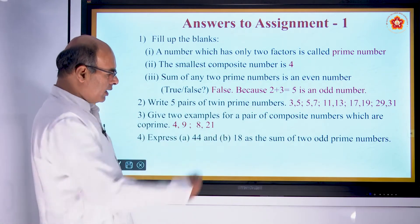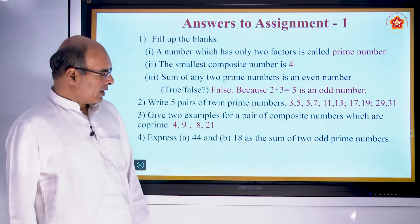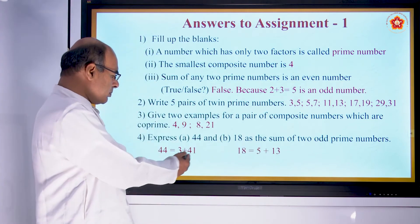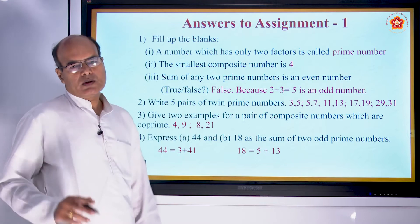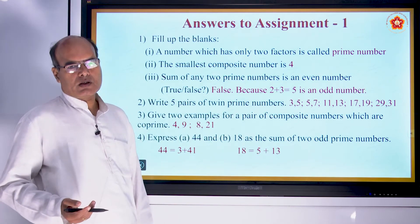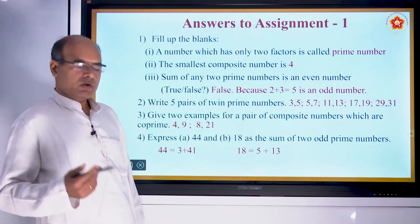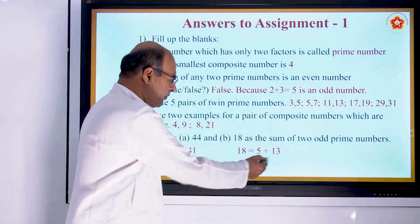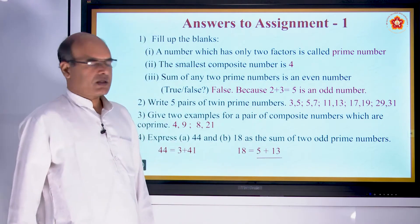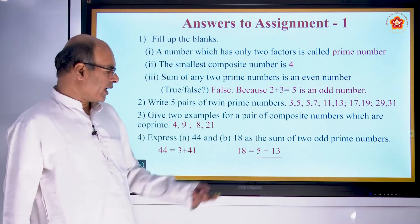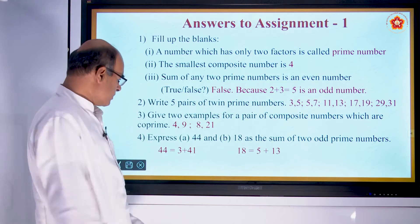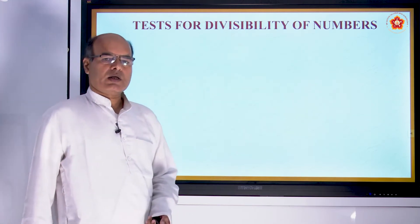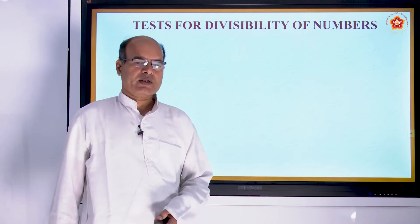Express 44 and 18 as the sum of 2 odd prime numbers. For 44, you can write 3 plus 41. You can also write it in other ways. For 18, it can be written as 5 plus 13, the sum of 2 prime numbers. These were the questions given in the last video as assignment.